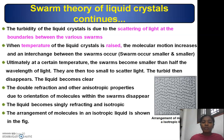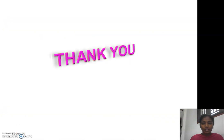The arrangement of molecules in an isotropic liquid is shown in the figure in a collapsed manner — there is no structural shape of crystals present.